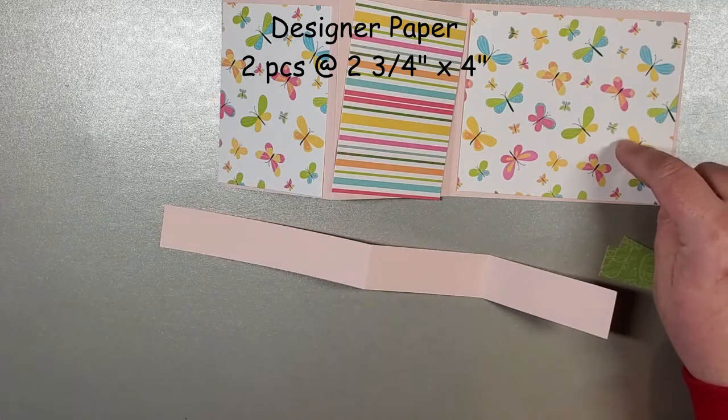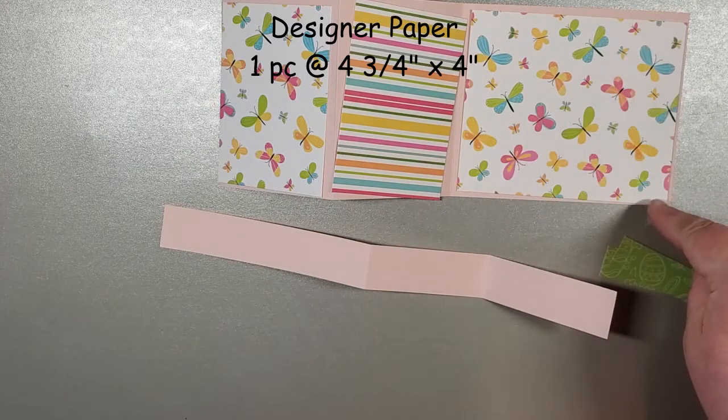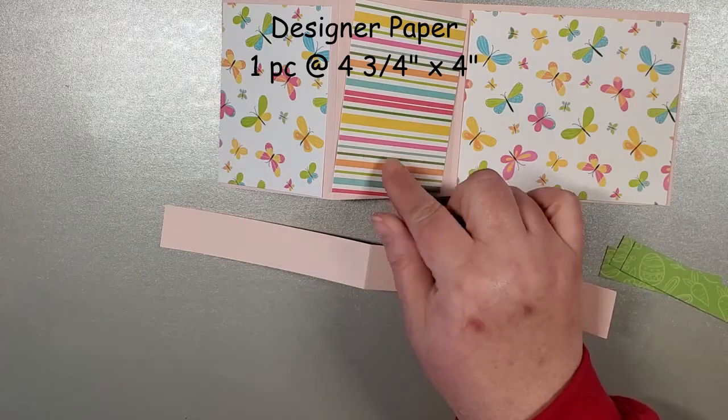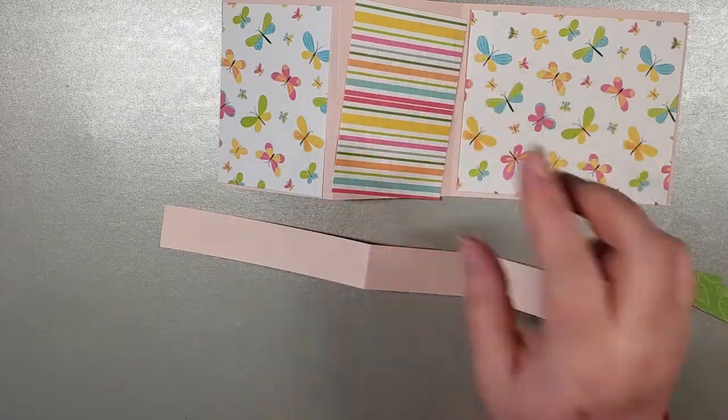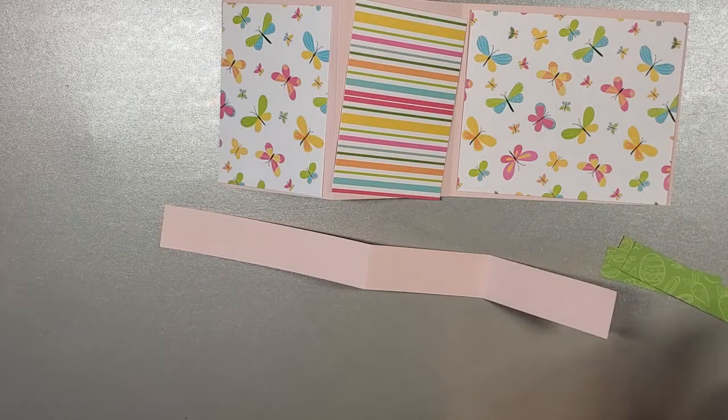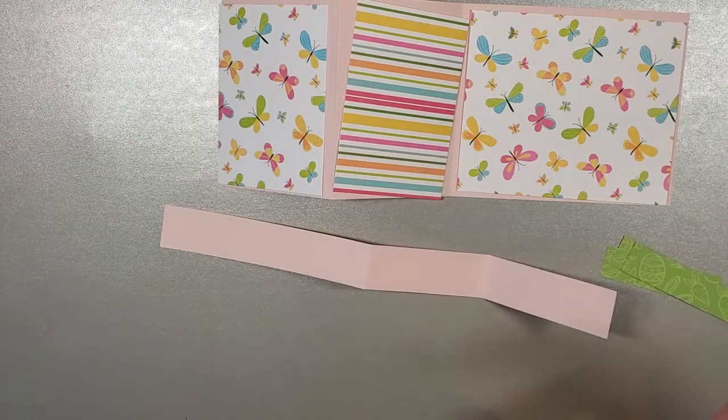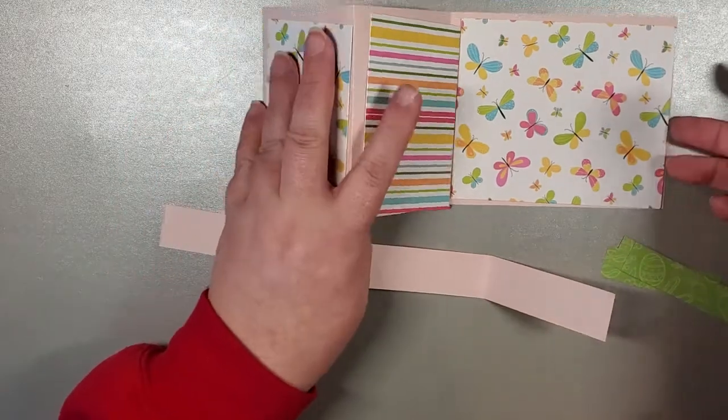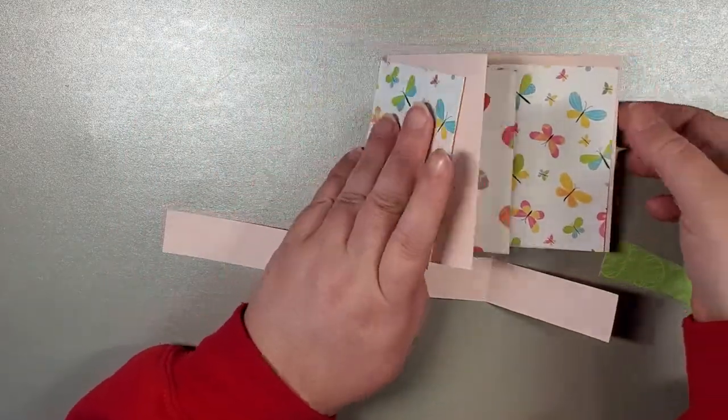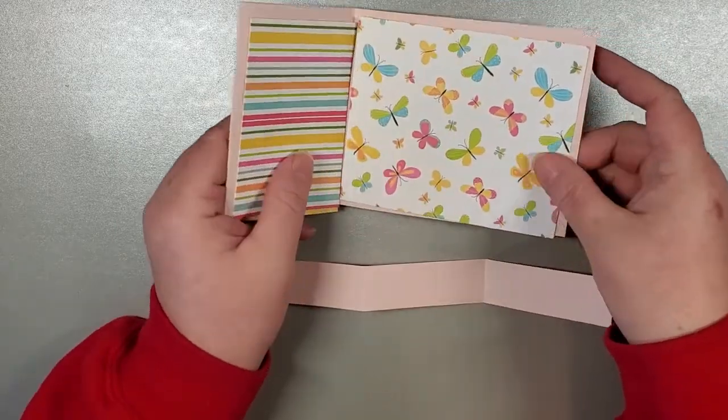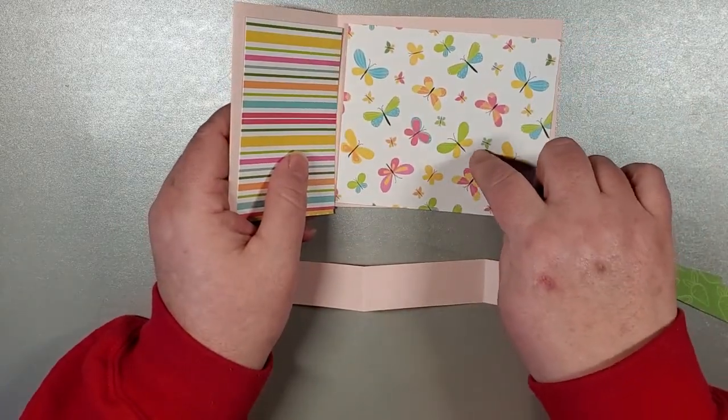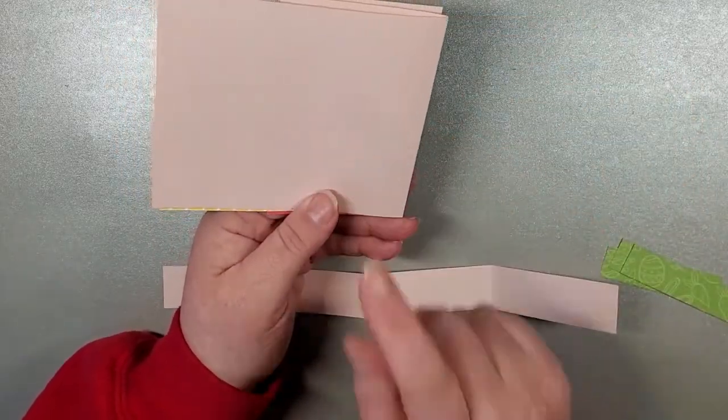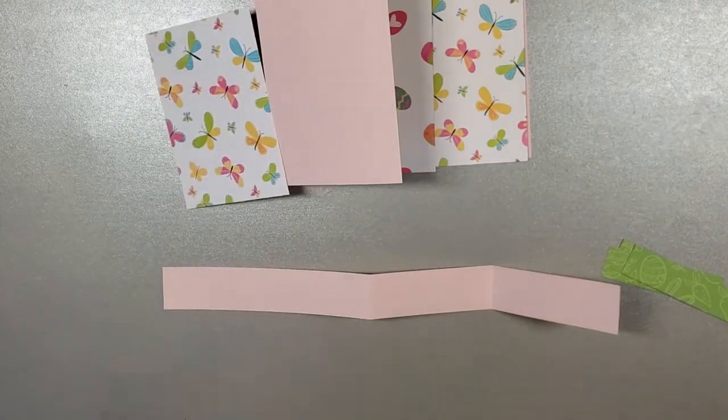This last one is 4 and 3 quarters by 4. If you wanted to have this panel be the panel where you have a little message, or if you wanted to do some stamping, then you could just have that as white or another color. I think ultimately what I'm going to do is cut a second piece that is the same as this one, just white, and have it on the back.